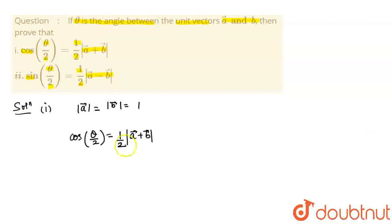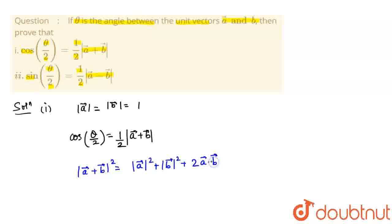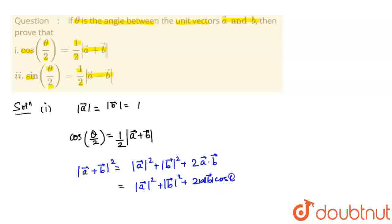Let us square it. |a + b| whole squared would be equal to magnitude of a squared plus magnitude of b squared plus twice of a·b. So this can be written as |a|² + |b|² + 2|a||b|cos(θ).